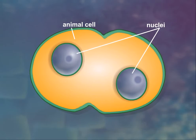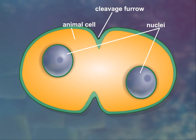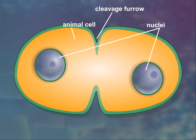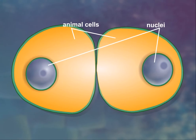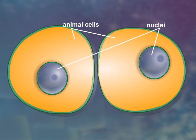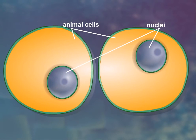Cytokinesis is the phase of the cell cycle during which the cytoplasm actually divides. It follows nuclear division and involves the splitting of the cell into two cells.